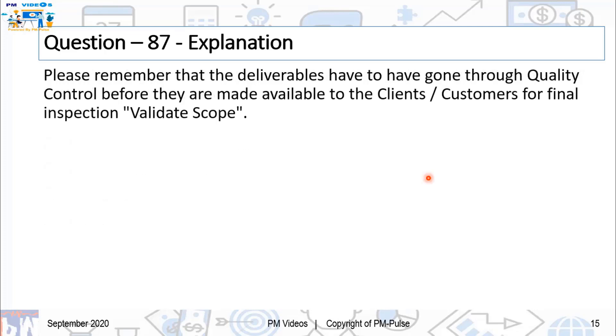Please remember that the deliverables have to have gone through quality control before they are made available to the clients or customers for final inspection. Validate scope. All right. So keep that in mind.